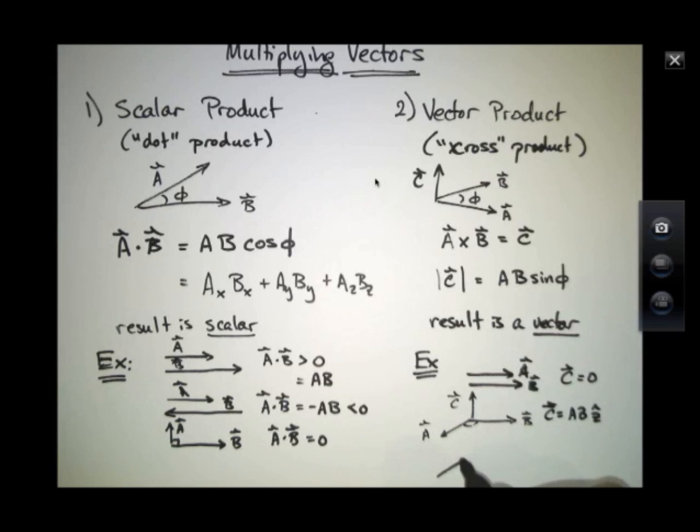On the other hand, if this was A and this was B, this was the X direction and that was the Y direction, C would point straight down.